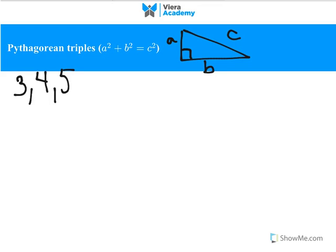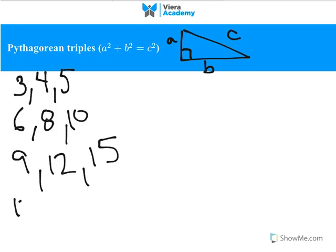If you know 3, 4, and 5, you can memorize other triples. For example, by just multiplying everything by 2, you will obtain 6, 8, and 10, which is essentially another triple. By 3, you will get 9, 12, 15. By 4, it will be 12, 16, and 20.